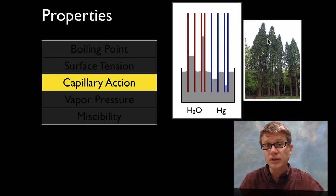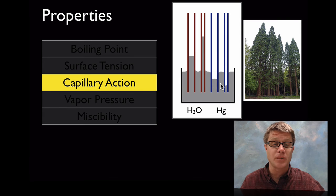That's how water gets up a tree. There are really tiny tubes called xylem that allow water to move up it. But if we were to look at something like mercury, it's attracted to itself but not attracted to its surroundings, so it's actually going to move down in a capillary tube.